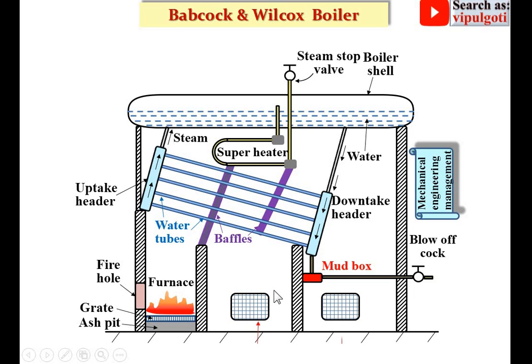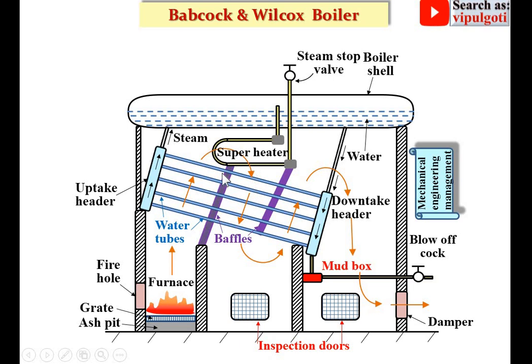These are the inspection doors. This is the damper where the flue gases exit from the boiler. This is the path of the flue gases that are produced in the furnace — they travel in a sine wave form due to the baffles, so that more time is available to exchange heat from the flue gases to the water tubes. I can write over here 'this is the path of flue gases'.